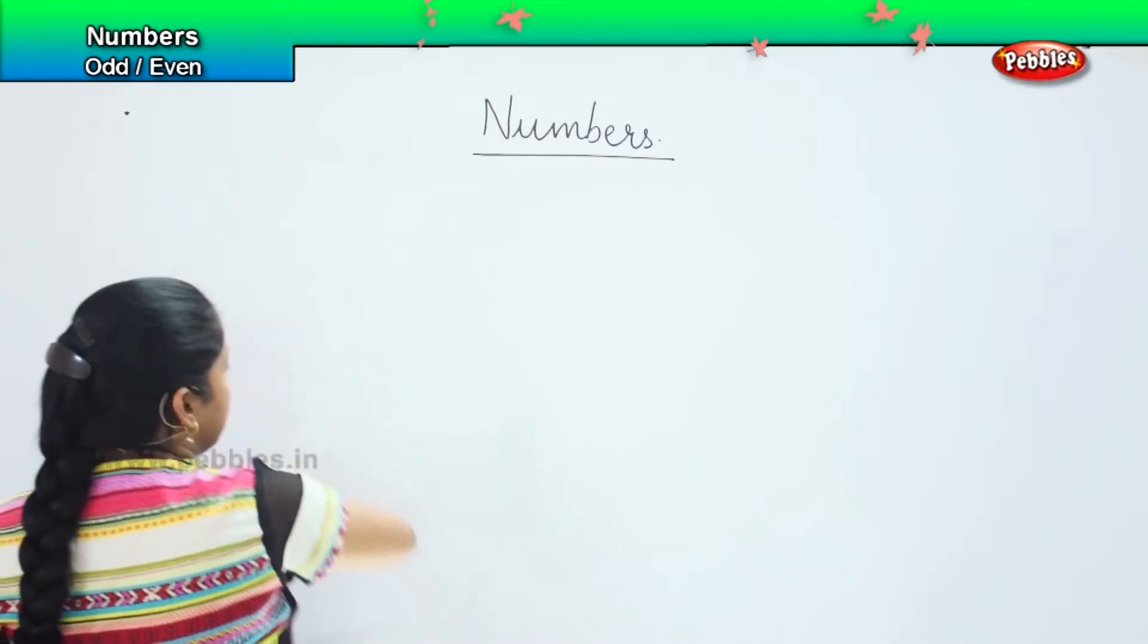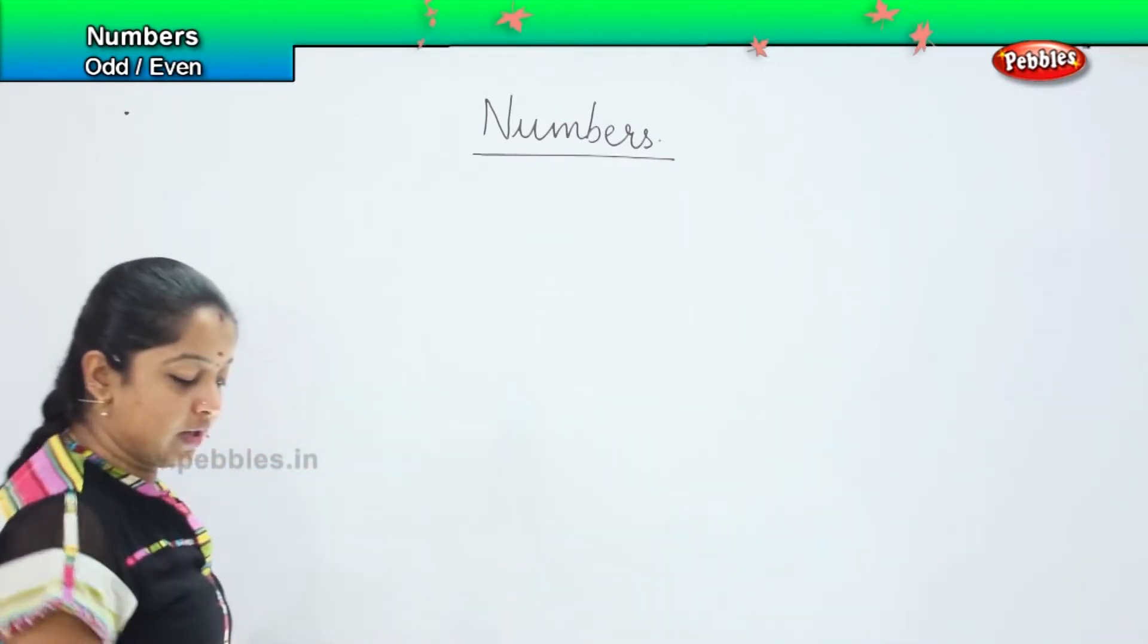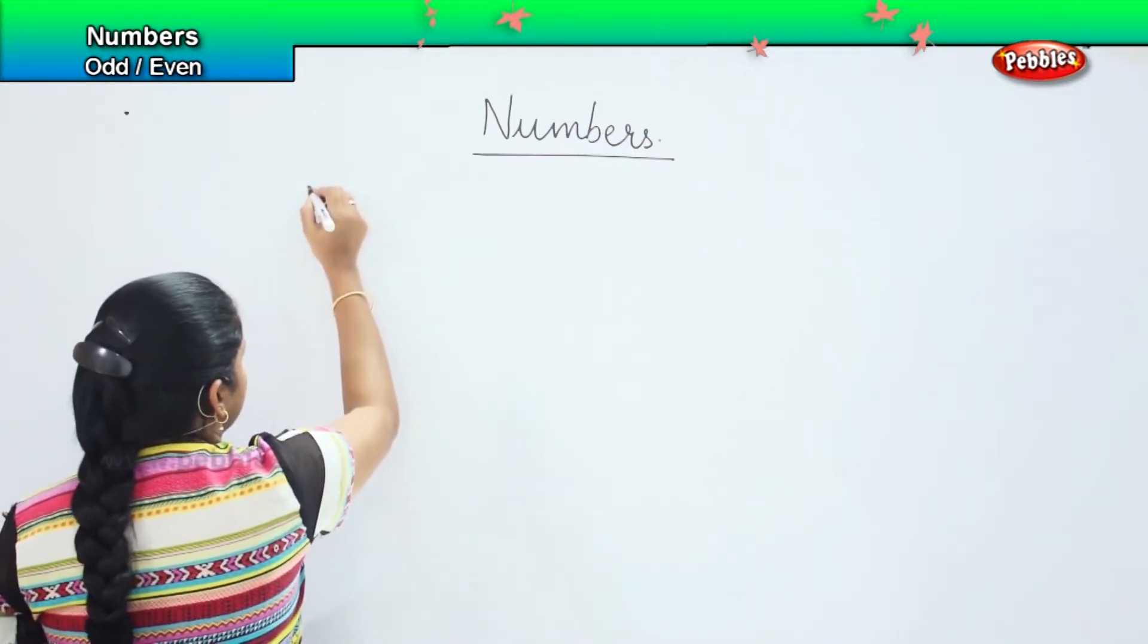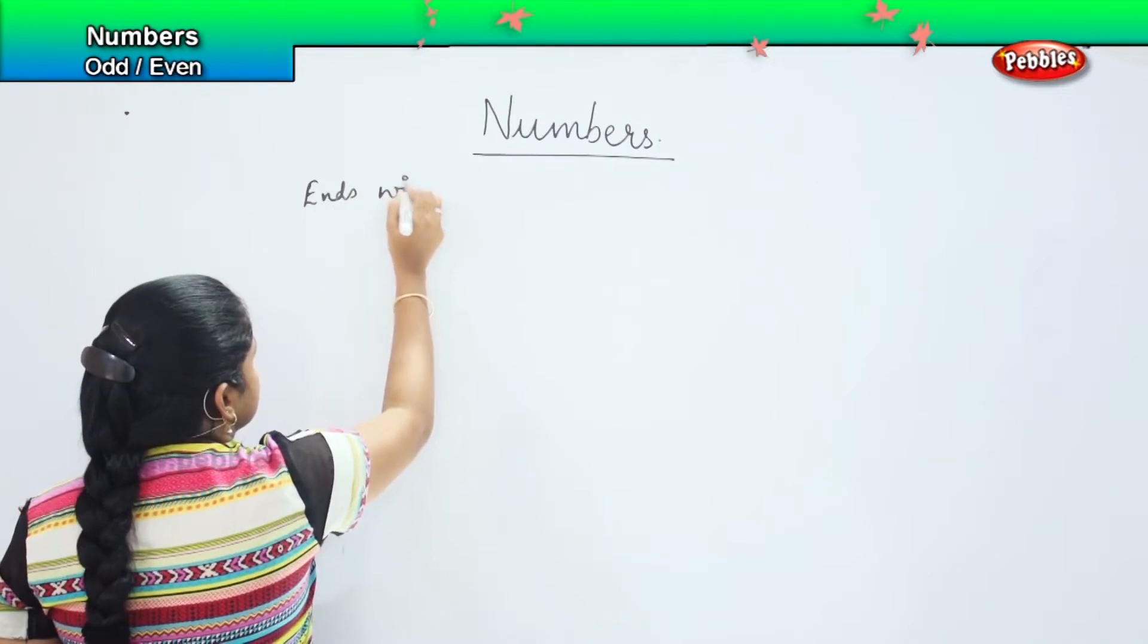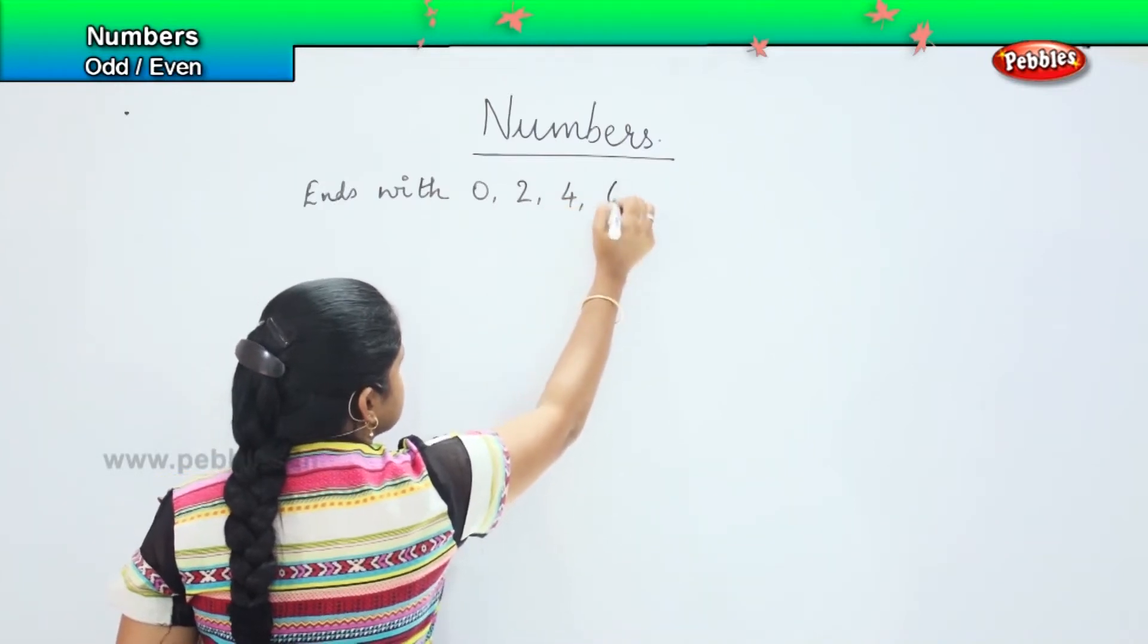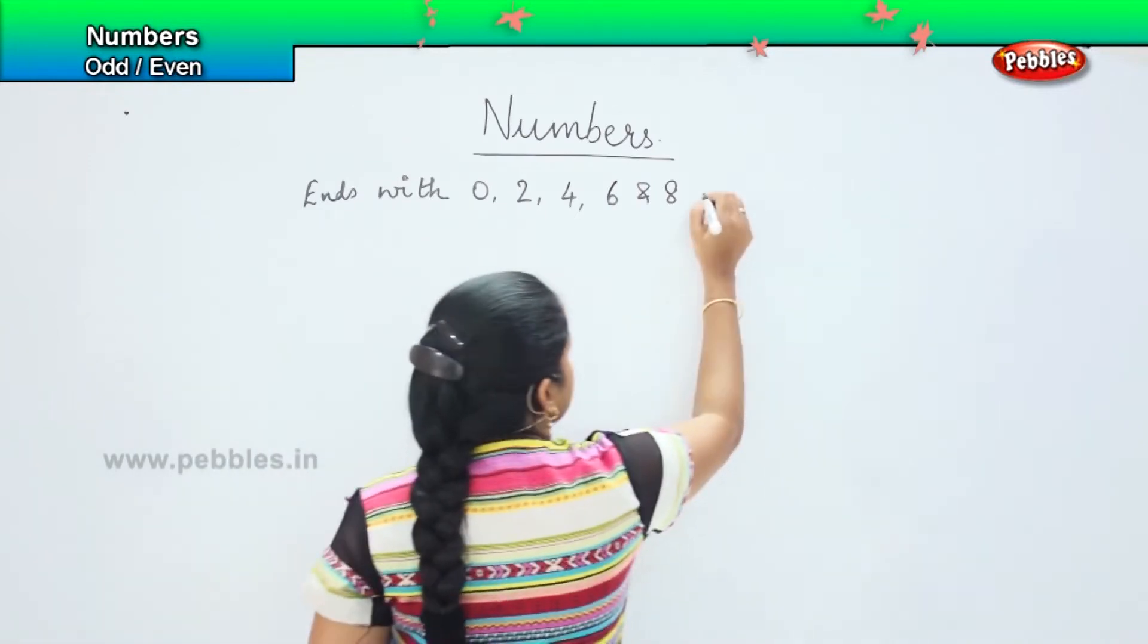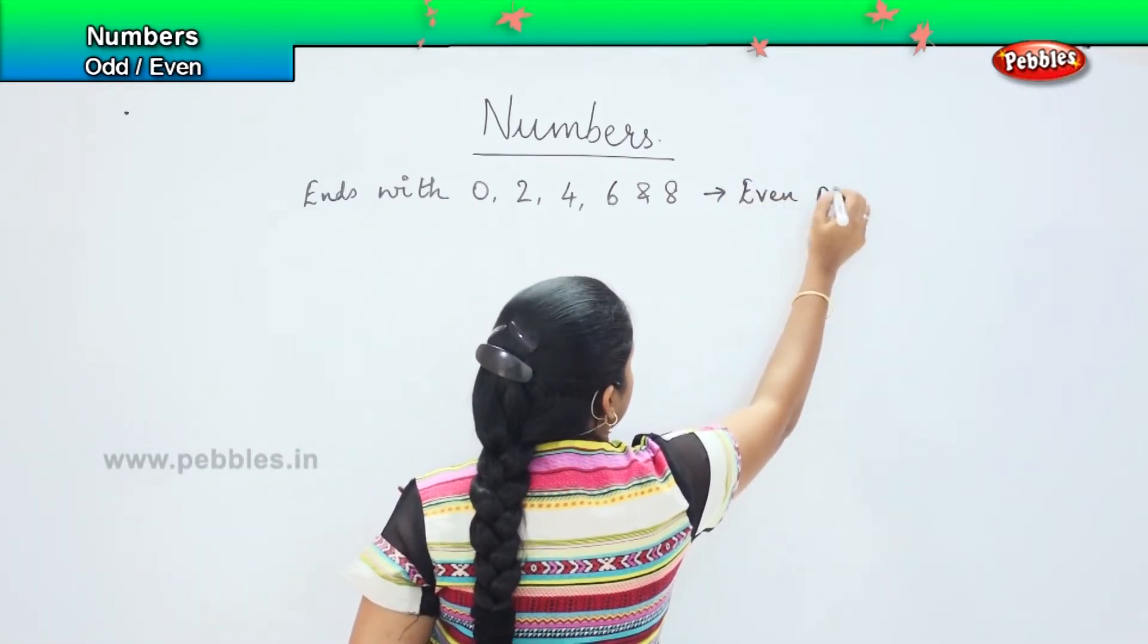If a number is given big, how will you identify whether the given number is odd or even? Remember, whenever a number ends with 0, 2, 4, 6, and 8, they are called even numbers.